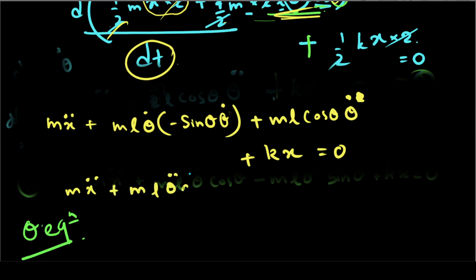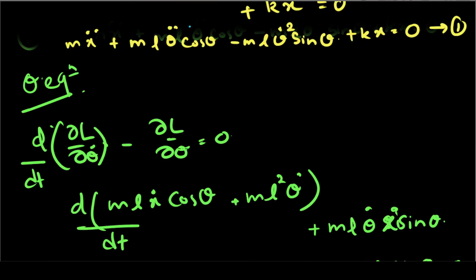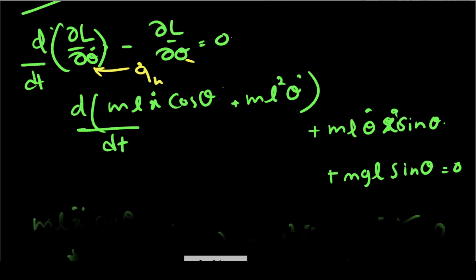Now for the theta equation, this is the theta equation. This is a general coordinate. We have mL x dot cos theta, mL dot. This is partial differentiate. I can show potential energy.